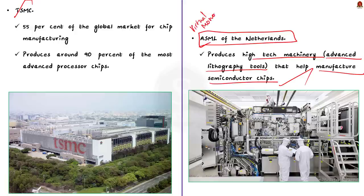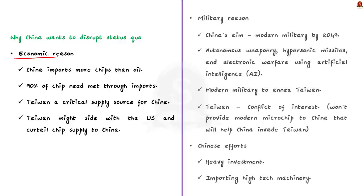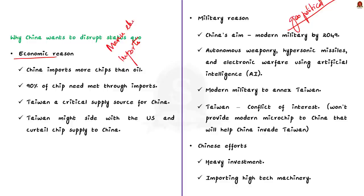China wants to disrupt this status quo and build a domestic chip manufacturing industry of its own. China has two reasons — one economic and one geopolitical. The economic reason: most modern electronic devices like mobiles and laptops are manufactured in China, but China does not produce advanced semiconductor chips locally. 90% of China's semiconductor needs are met through imports, and China spends more on importing semiconductor chips than on importing oil. The majority of imports come from Taiwan, making it a critical supply source for China, which is heavily influenced by the US.